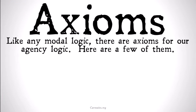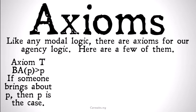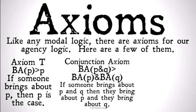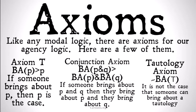Like any modal logic, there are axioms for our agency logic. Axiom T: if someone brings about that P, then P is the case. The conjunction axiom: if someone brings it about that P and Q, then they bring it about that P, and they bring it about that Q. And the tautology axiom: it is not the case that someone can bring about a tautology — tautologies are just already true; you don't bring them about or cause them to be true.